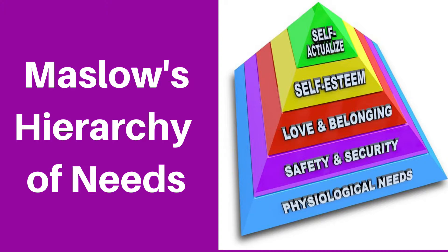Let's examine the levels on the pyramid to define what they mean. The bottom level is the most basic needs — the physiological needs. These include things like warmth, clothing, food, and water. Maslow believed that these basic needs included housing or shelter, something to eat and drink, and something to clothe our bodies with.